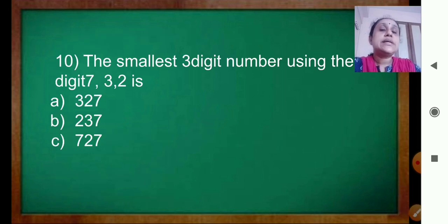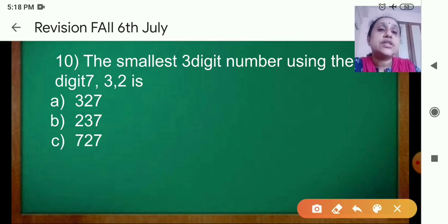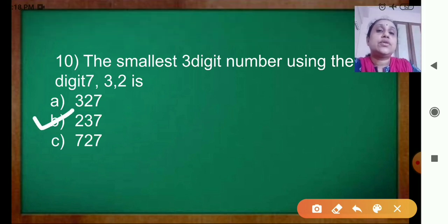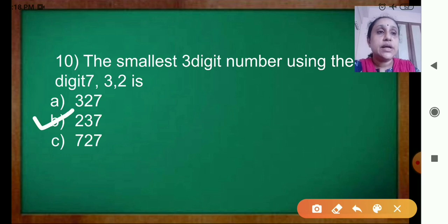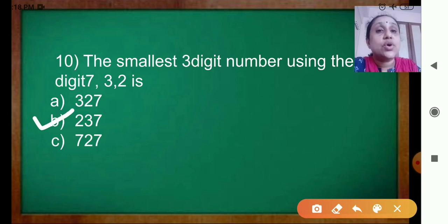Question 10: The smallest three-digit number using the digits 7, 3, 2. Three options are given. The smallest three-digit number is 237. This is the correct answer. Like this you have to do in your exam also — read the question carefully, think which is the correct option, and click it for your online exam.